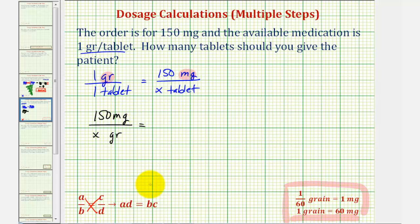So the second rate or ratio is going to be 60 milligrams to one grain. Now notice how we have the same units on top, the same units on the bottom, so now we can cross multiply and solve for X.